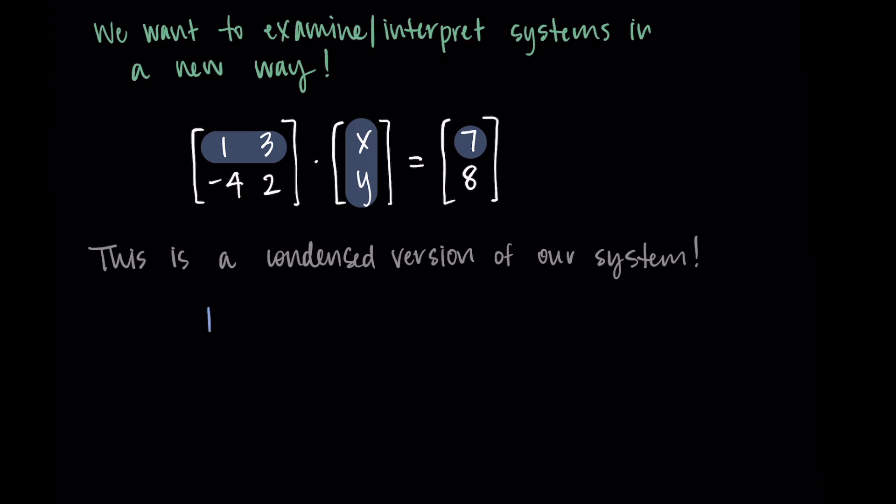So when we do this we would get 1x plus 3y and that would be then equal to 7. We would repeat this process with the second row so we would do a dot product of the second row with the x y vector. We'd get negative 4x plus 2y and that would be equal to 8.